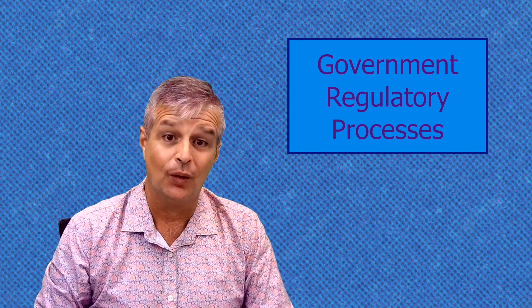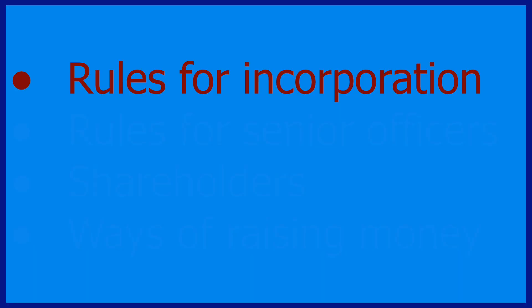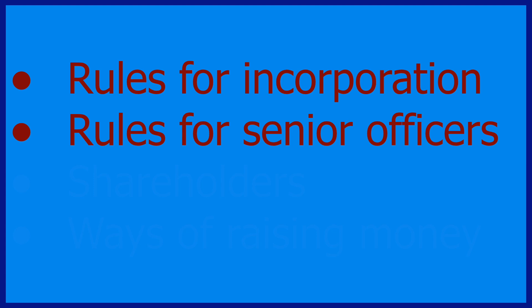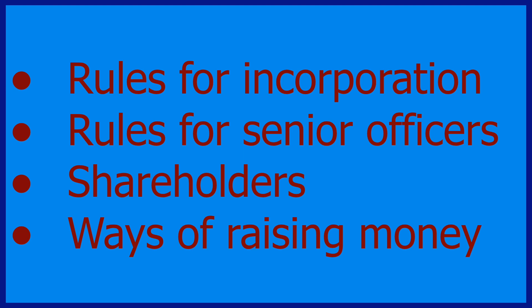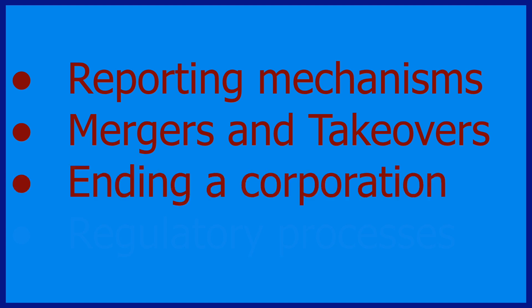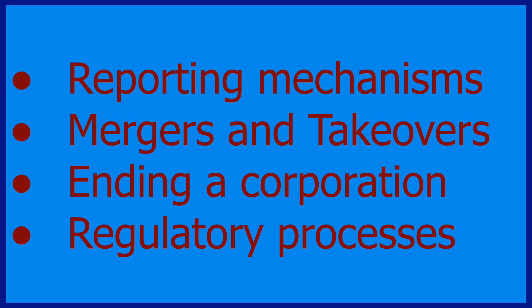It'd be impossible to go into all of these in a two-hour video. The rest of this video breaks down those eight functions. We'll start by looking at how companies are formed, how they're registered and incorporated. We'll then look at the rules for key officers such as directors. We'll look at the role and rights of members of the corporation, including shareholders, and the ways companies can raise money through shares and debentures. We'll look at how processes such as takeovers and mergers work, and then finally we'll look at how corporations end. To wrap up, we'll circle back to look at the regulators and in particular ASIC.